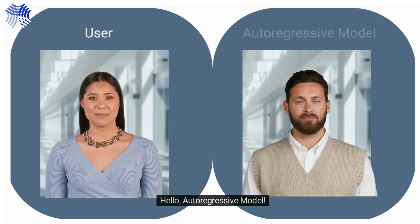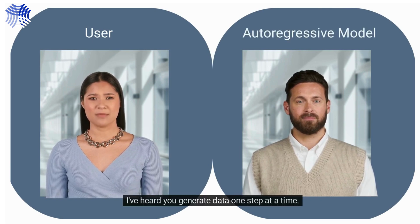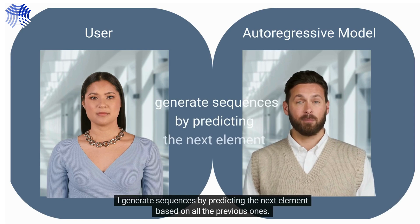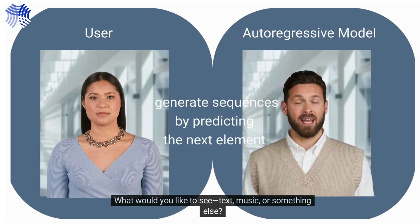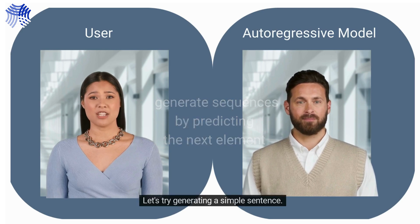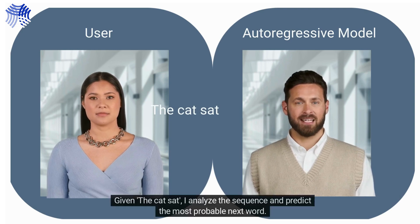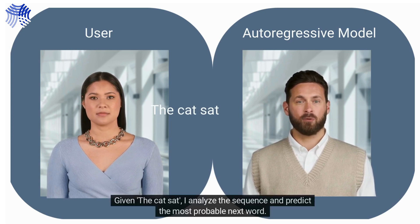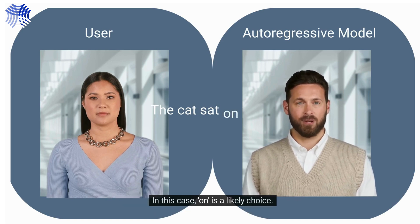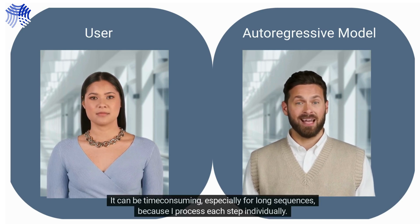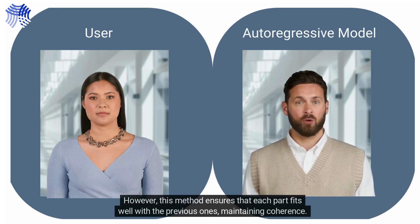User: 'Hello, auto-regressive model. I've heard you generate data one step at a time. Can you help me understand how you work?' Model: 'Absolutely. I generate sequences by predicting the next element based on all the previous ones. What would you like to see — text, music, or something else?' User: 'Let's try generating a simple sentence. I'll start with "the cat sat" — what comes next?' Model: 'Given "the cat sat," I analyze the sequence and predict the most probable next word. In this case, "on" is a likely choice.' User: 'But doesn't generating data one piece at a time take a long time?' Model: 'It can be time-consuming, especially for long sequences, because I process each step individually. However, this method ensures that each part fits well with the previous ones, maintaining coherence.'